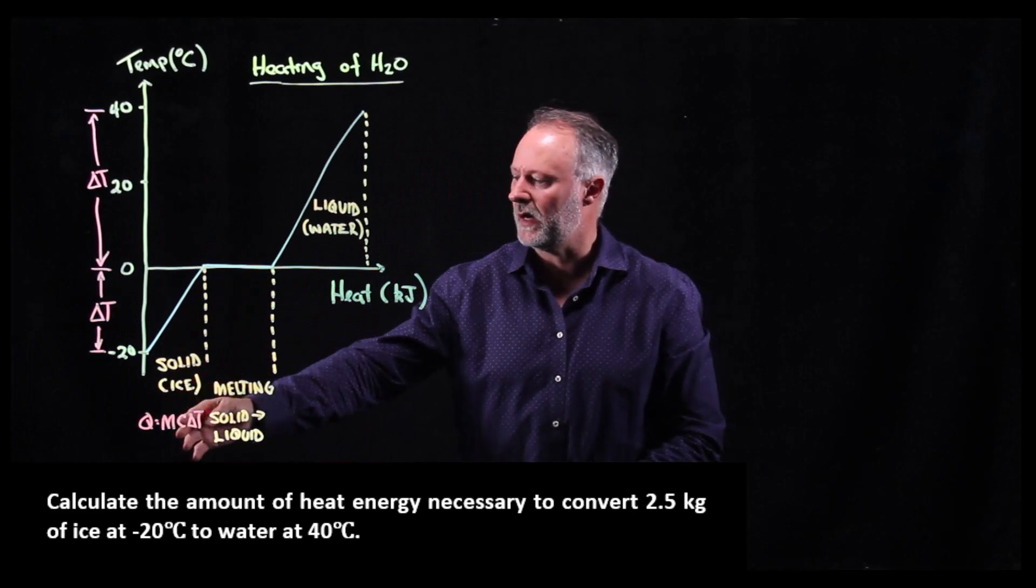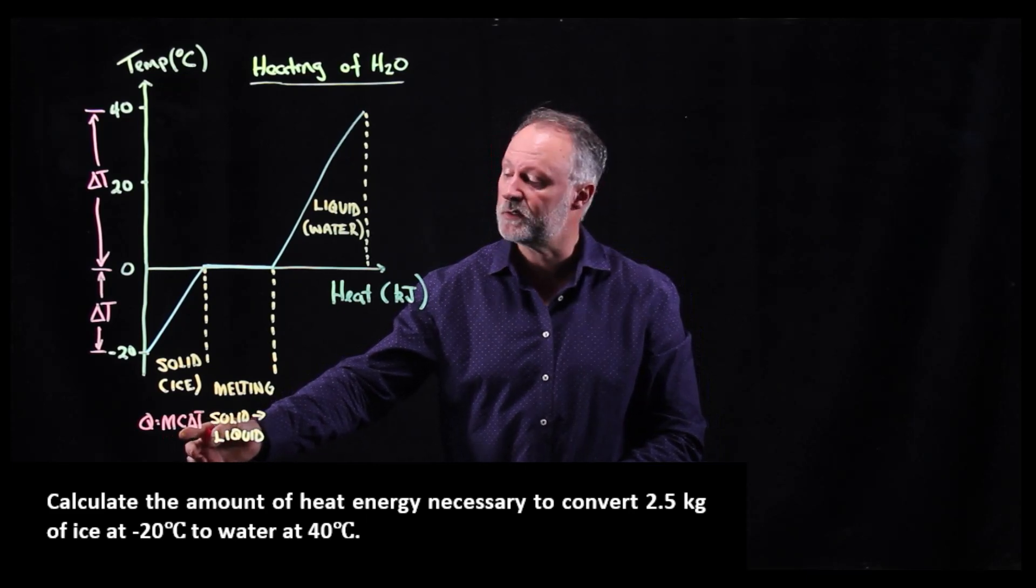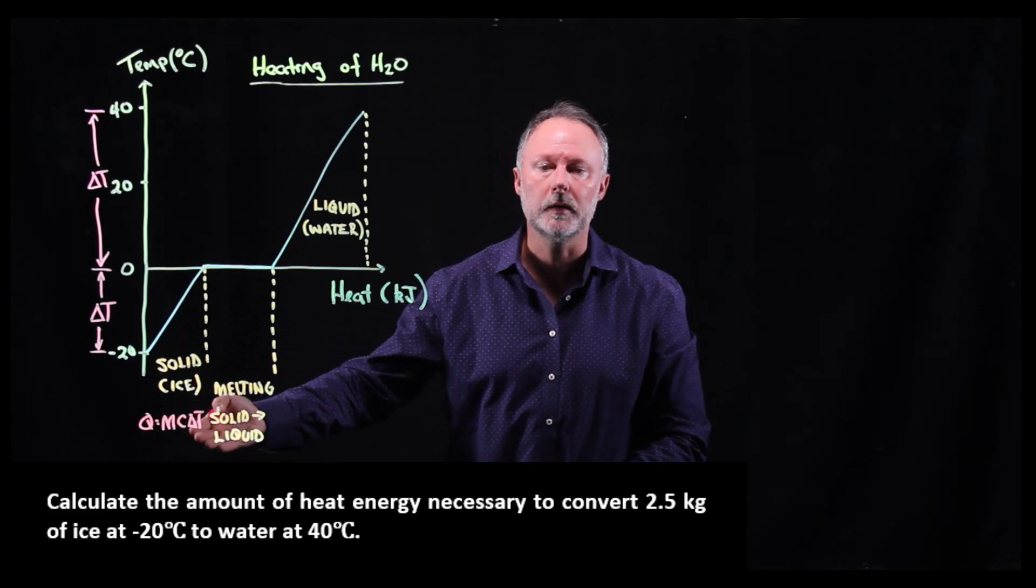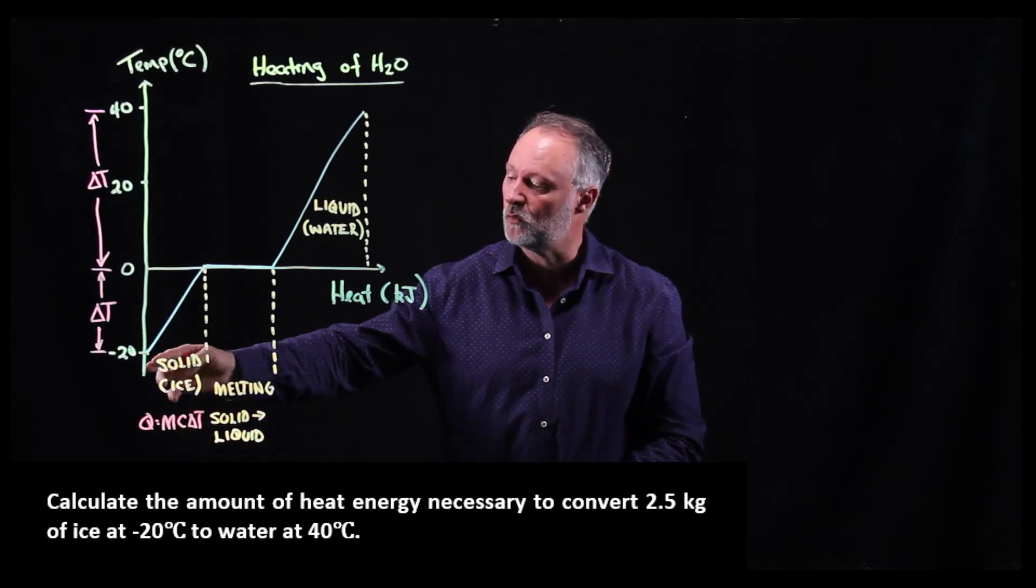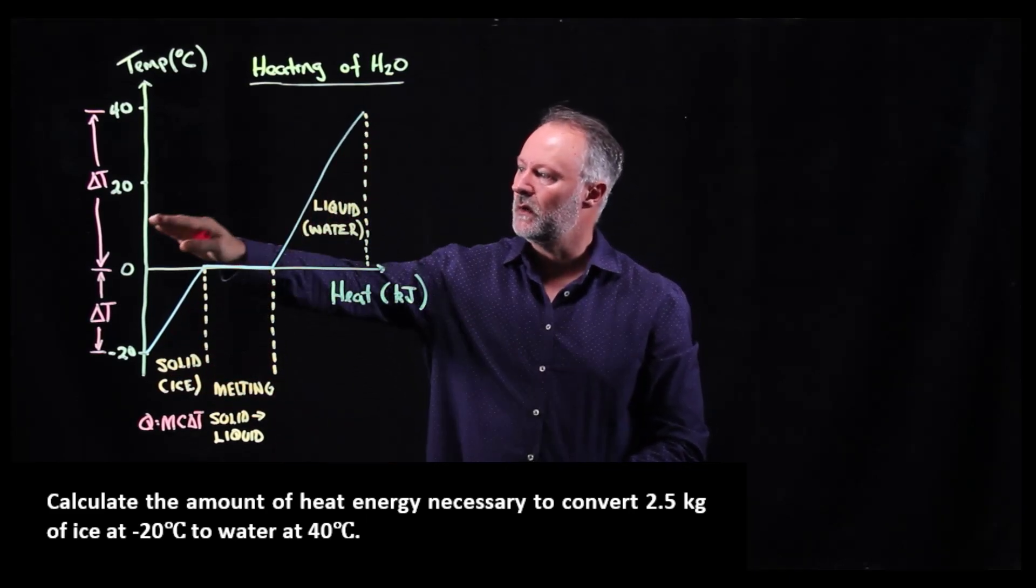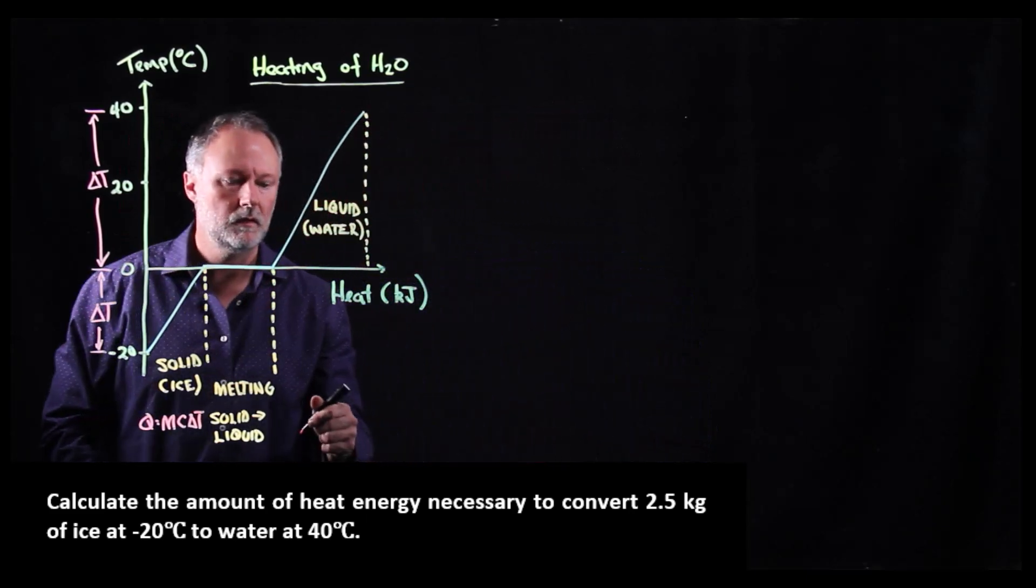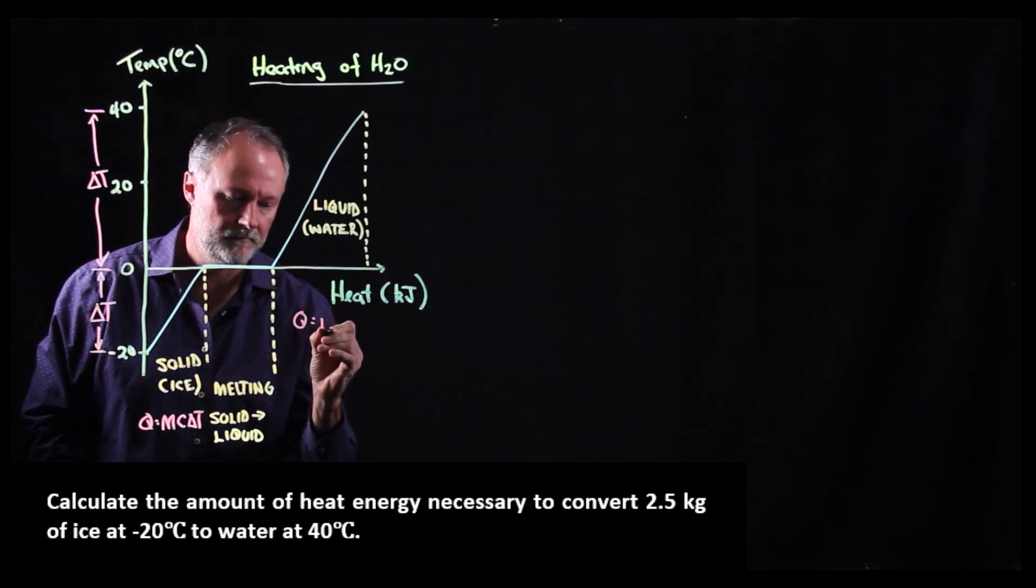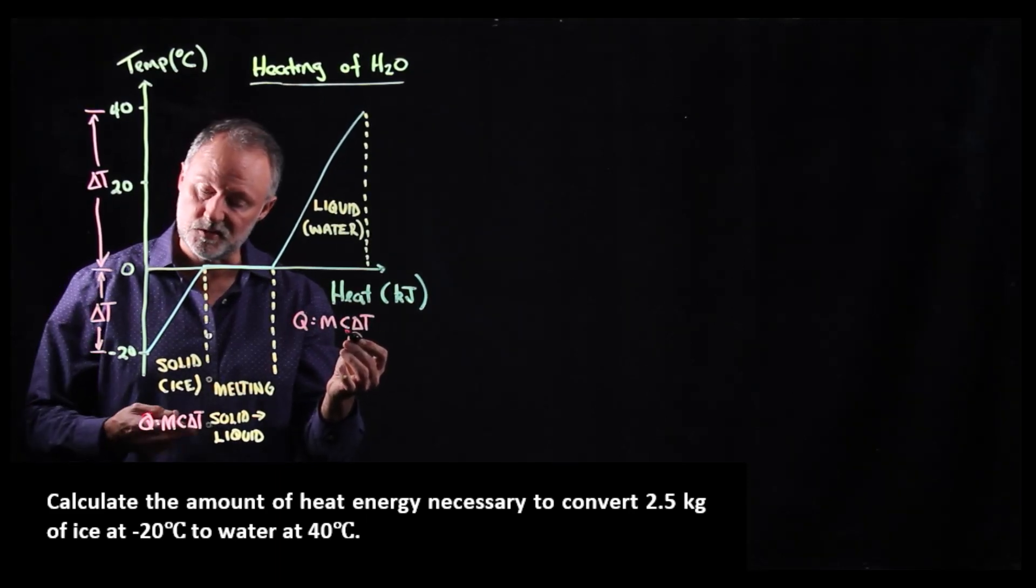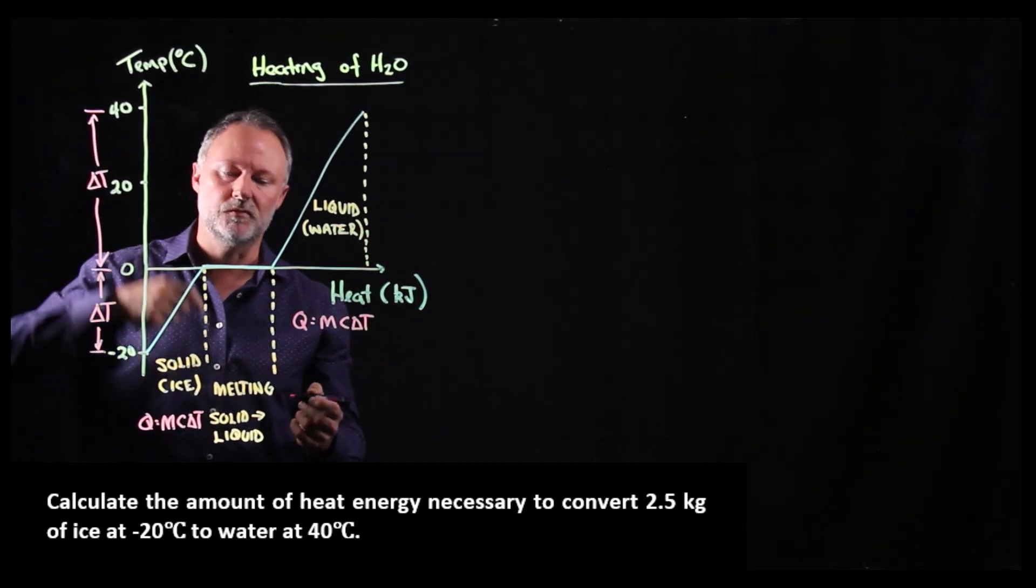In our first section, where there's solid ice, there is a delta T, we have a mass, and there is a specific heat capacity for ice. So we can work out the heat put into this system by Q equals mc delta T, the heat energy required to raise this ice from minus 20 to zero. Likewise, in section three, there is also a delta T, a change in temperature. So this one also can be calculated using Q equals mc delta T. A different specific heat capacity, this time it's for liquid water. And the delta T is different as well, it goes from zero to 40.